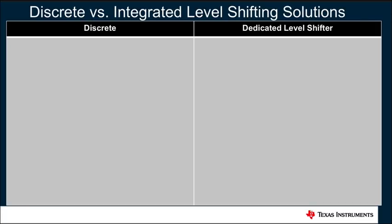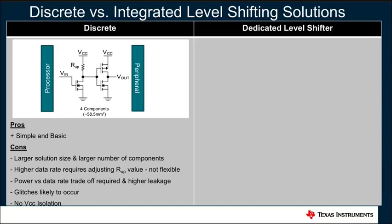Now let's take a quick look at how a common discrete push-pull level-shifting implementation compares with the 2N7001T. Discrete solutions by their nature are simple and have basic operational functionality with no specific level translation parameters that can be analyzed for understanding performance. The discrete level translation implementation shown in this example consists of four discrete components that provide simple level translation between a processor and peripheral device. Some of the pitfalls or drawbacks to a discrete solution like this are larger solution size in terms of board space consumed by the components. In addition, adjusting data rate will require different pull-up resistor values, making the implementation less suitable for dynamic applications. Discrete implementations are also less power efficient, often forcing designers to make power versus data rate trade-offs. Designers also need to deal with glitches, and discrete solutions have no inherent VCC isolation.